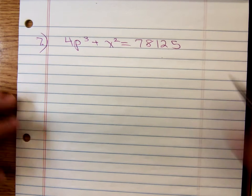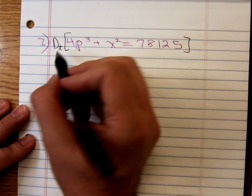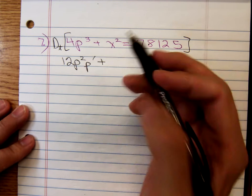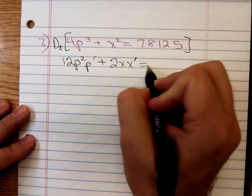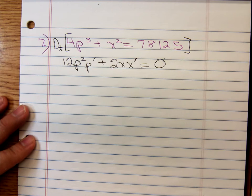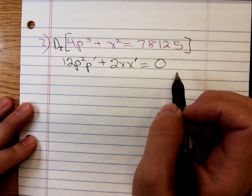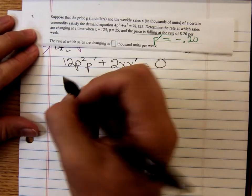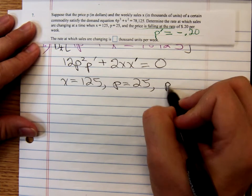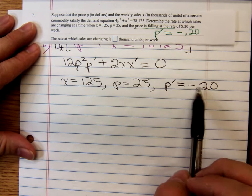We're going to differentiate with respect to time. The derivative of 4P cubed with respect to T is 12P squared P prime plus the derivative of X squared is 2X times X prime. And the derivative of 78,125 is 0. So the derivative part fell out very nicely. Now look back at the problem. Remember they told us that when X is equal to 125, P is 25, and the price is falling at a rate of 0.2, so P prime is equal to negative 0.2.